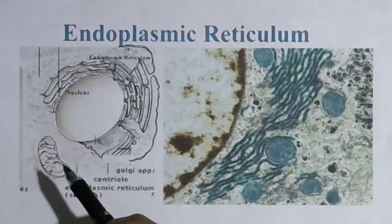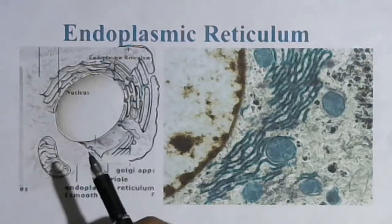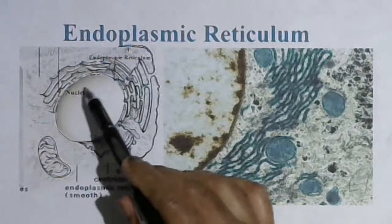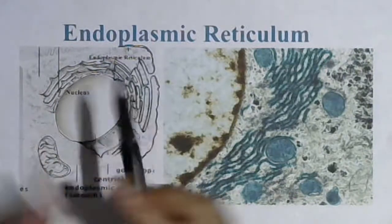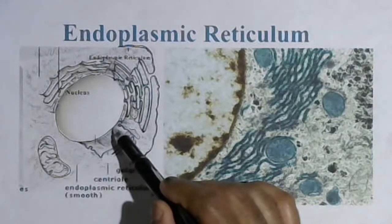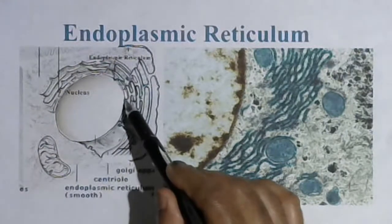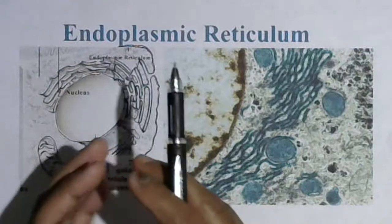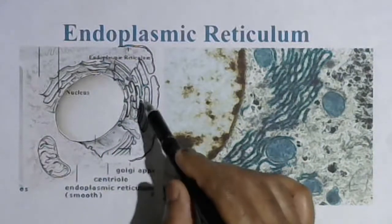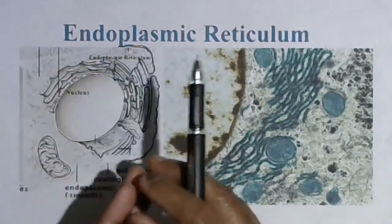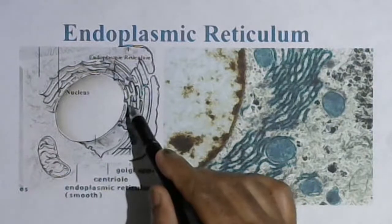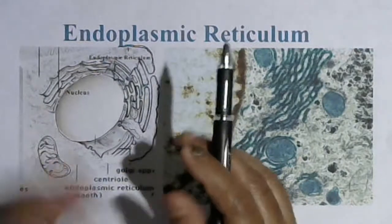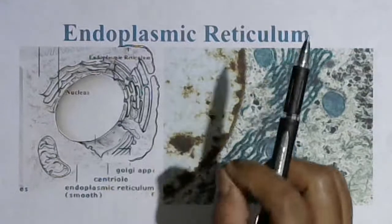The endoplasmic reticulum is also popularly known as the endoskeleton of cells. In eukaryotic cells, it is a network of highly branched, fine membranous tubules or interconnected membranes and hollow flattened sacs called cisterni. This network-like structure surrounding the nucleus is known as the endoplasmic reticulum.